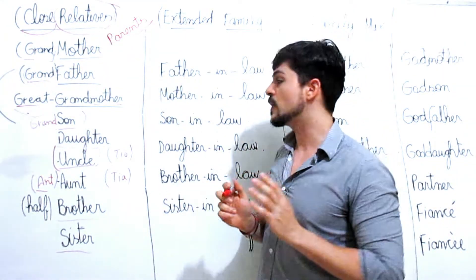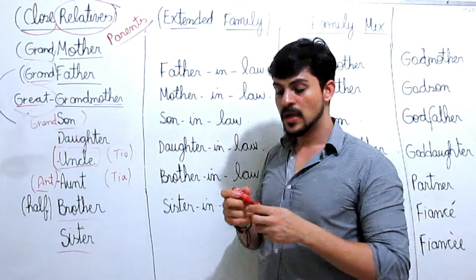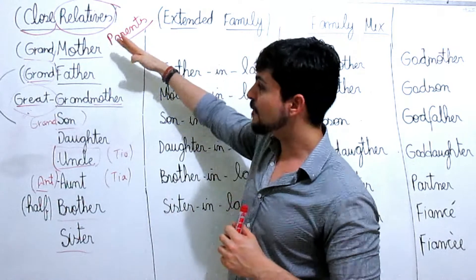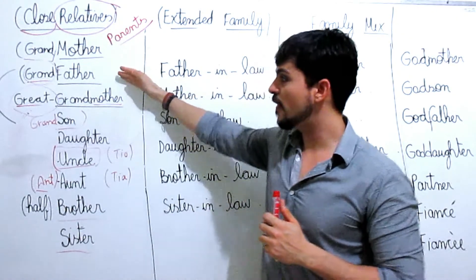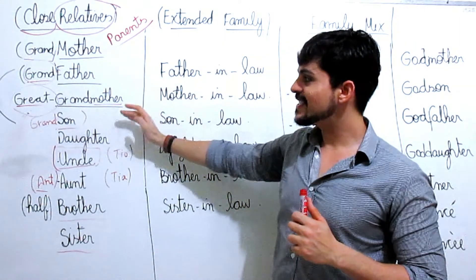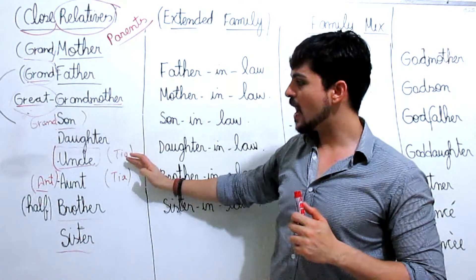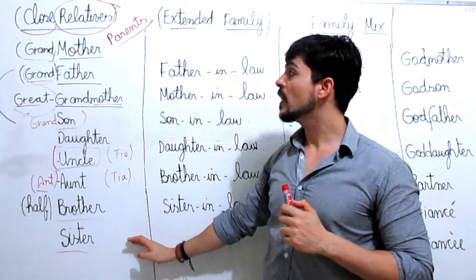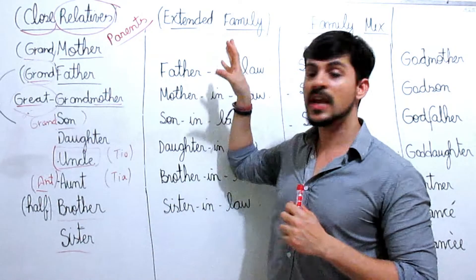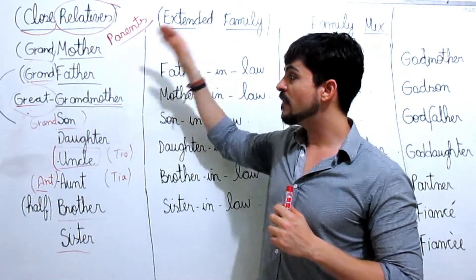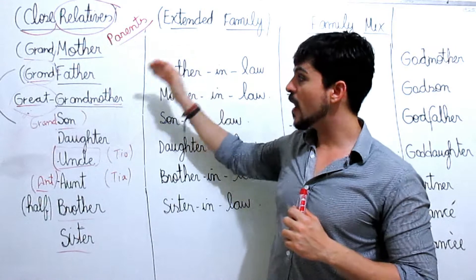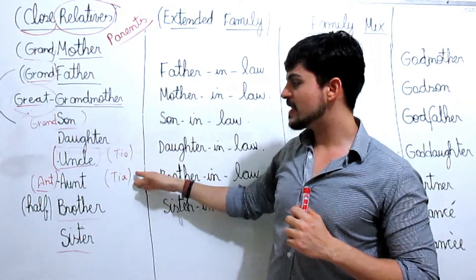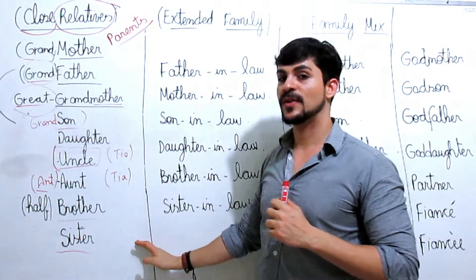They are close relatives — close to you. So let me say them again. We have: mother, father, grandmother, son, daughter, uncle, aunt, brother and sister. And using the American pronunciation we have: mother, father, grandmother, son, daughter, uncle, aunt, brother and sister. Now we have another group about the family — the extended family.